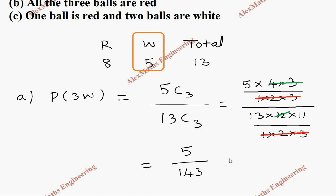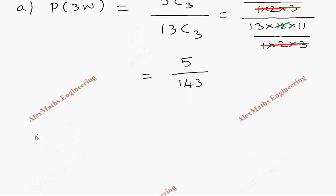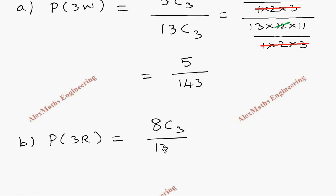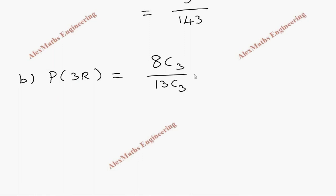Coming to part B, they are asking: all 3 balls are red. So all 3 come from the 8 red balls. P of 3 red is nothing but from the 8 we take 3, and the total selection is 13C3. All 3 should come from the red category, so we write 8C3 divided by 13C3.